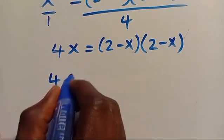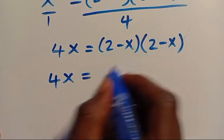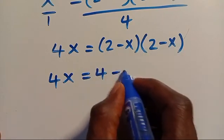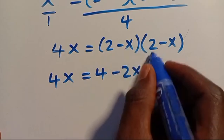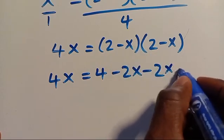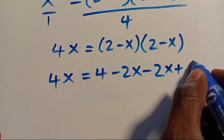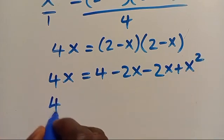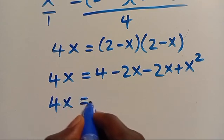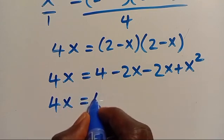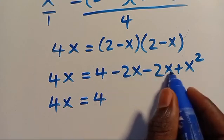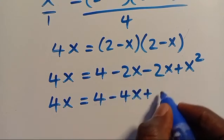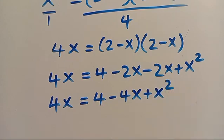So we have 4X equals 2 times 2, which gives us 4, then minus 2X, and then plus X squared. Here we have 4X, and expanding fully gives us 4X plus X squared.